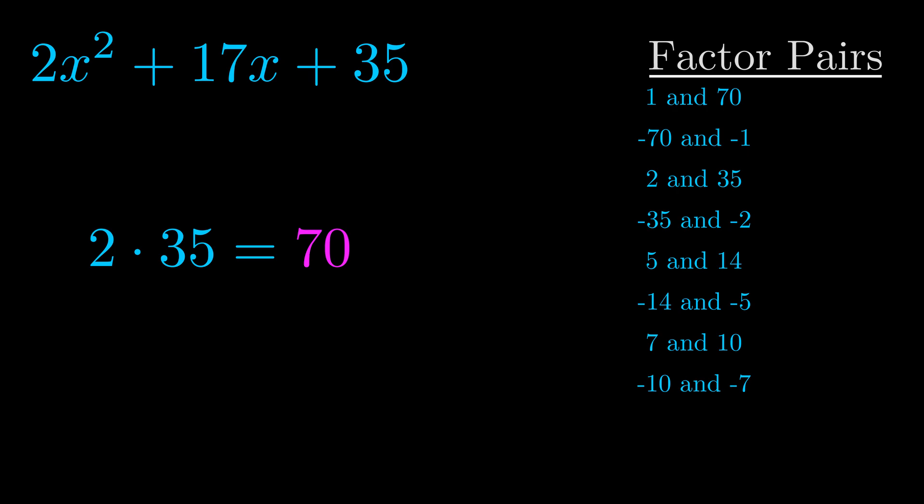The b value is the coefficient on the x term. That's the middle term, the one that we haven't done anything with yet. And really this is the only factor pair that we need.